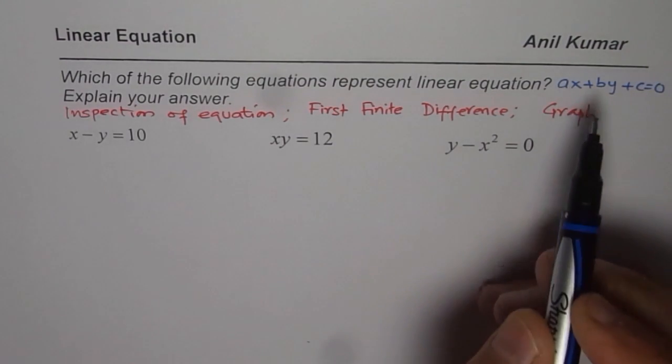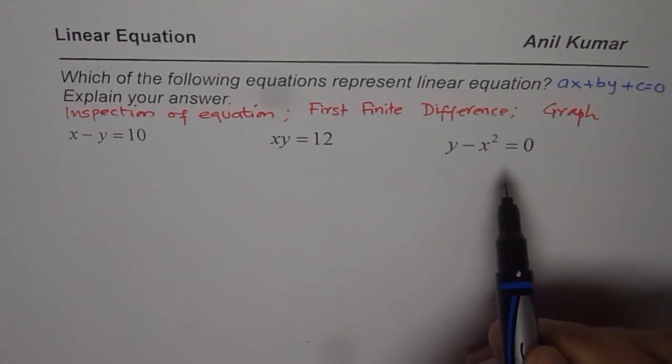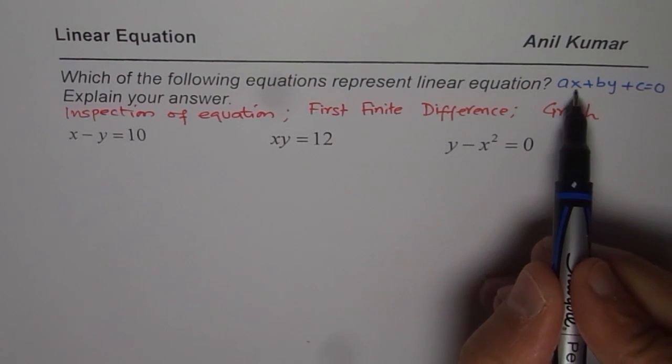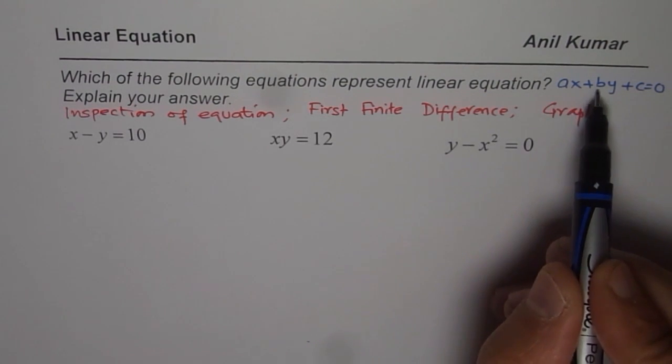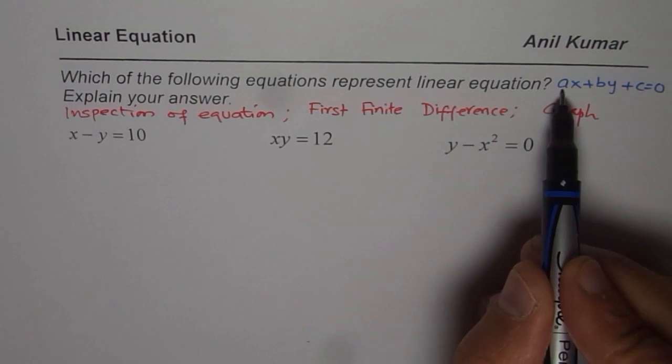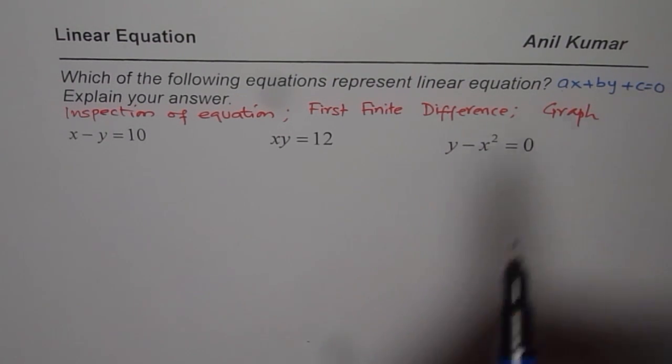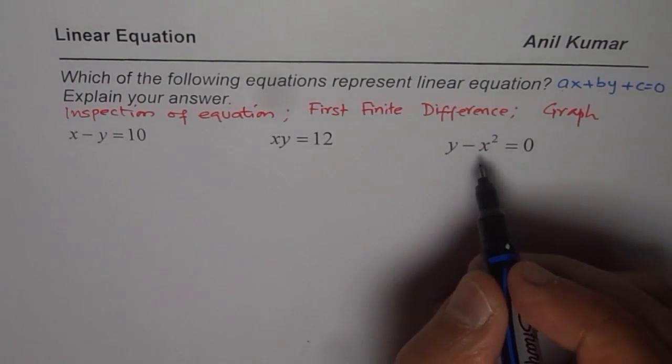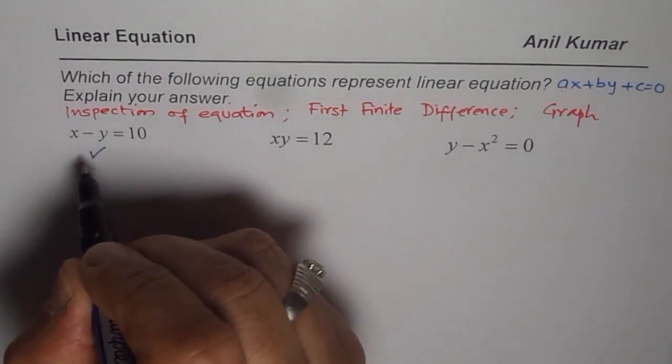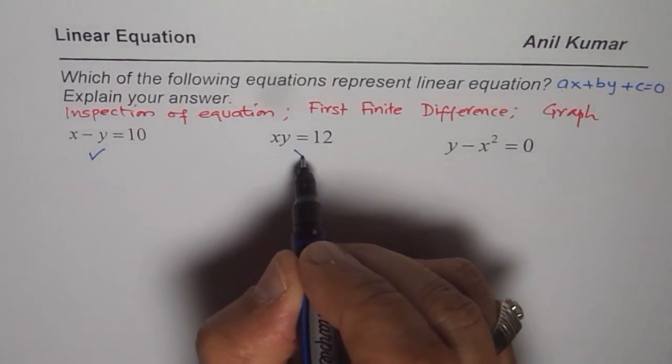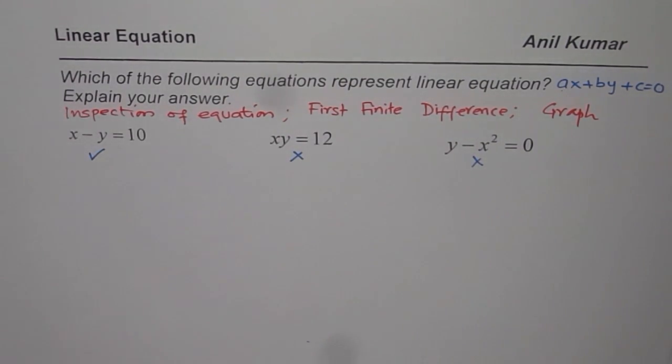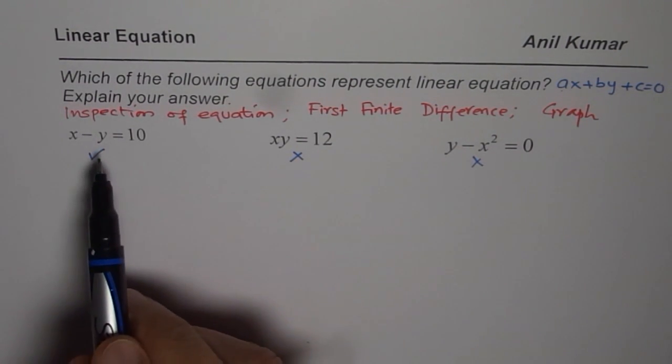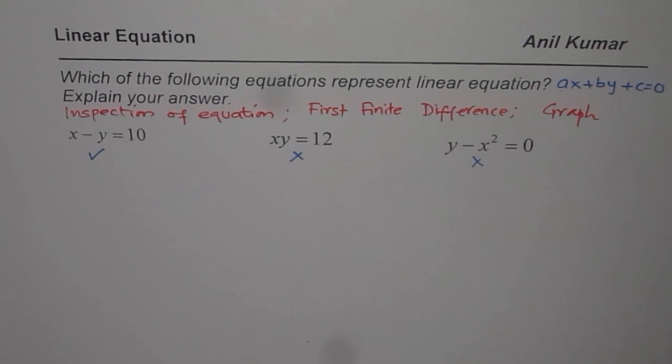Linear equation will be kind of Ax plus By plus C equals to 0. We do not have any square terms. We do not have terms where x and y gets multiplied. They are separate. They only have constants, real numbers as their coefficients. So from inspection, we say only linear equation is this one. Here, since they are multiplying, this is not. And here also, we have square. So it is not. From inspection, we can straight away say that the only linear equation here is the very first one.